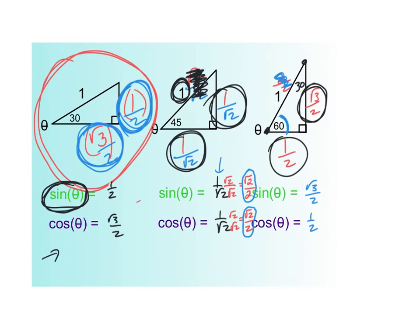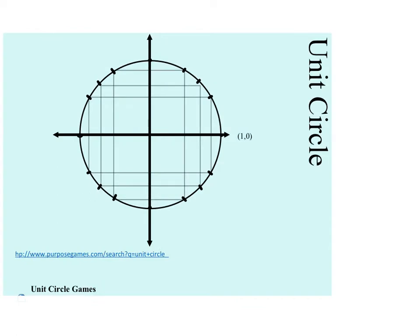So why did we do all of that? To get you ready for the unit circle. By now you should have this part down: pi over six, two pi over six, three pi over six, four pi over six, five pi over six, and six pi over six is the same as pi, and so on. You should know how to move around those.